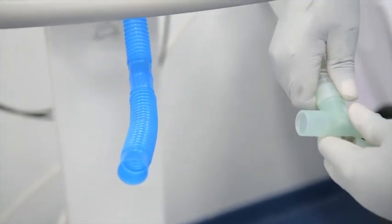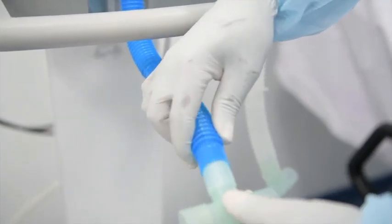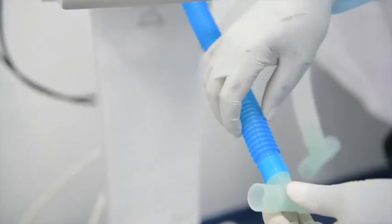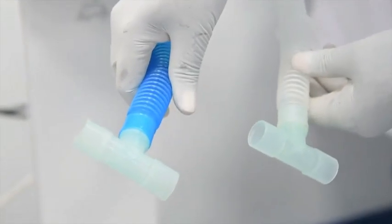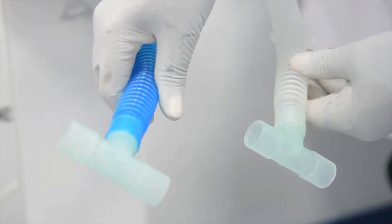So one T-piece will connect on your inspiratory arm, and the other T-piece will connect on the exhalation arm as well. This will allow the connection for the two patients to get inspiration and exhalation.